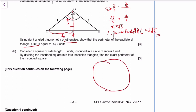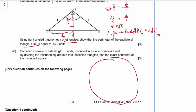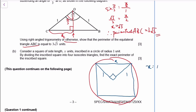Let's draw it. Imagine there's a square. The radius is 1, so this is 1, 1, and this is the right angle. So x should be easy to find — x is by Pythagoras' theorem, x is √2. Therefore the perimeter is 4 times √2.